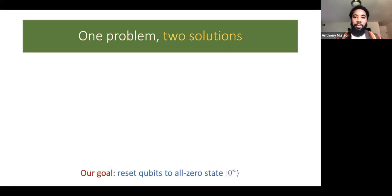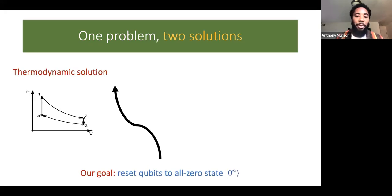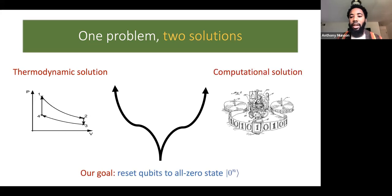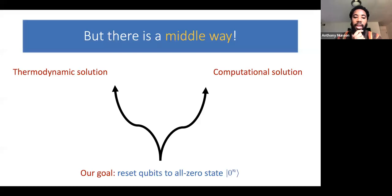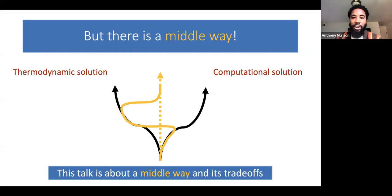Now let's talk about our solutions. We have a thermodynamic solution as well as a computational solution. There's also a middle way, and this talk is going to be about this middle way and its trade-offs.